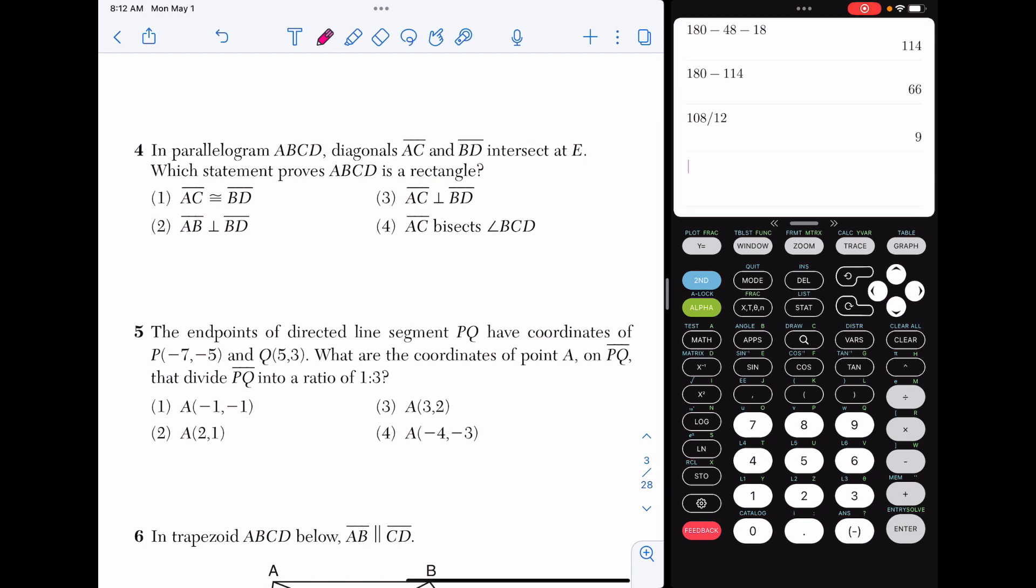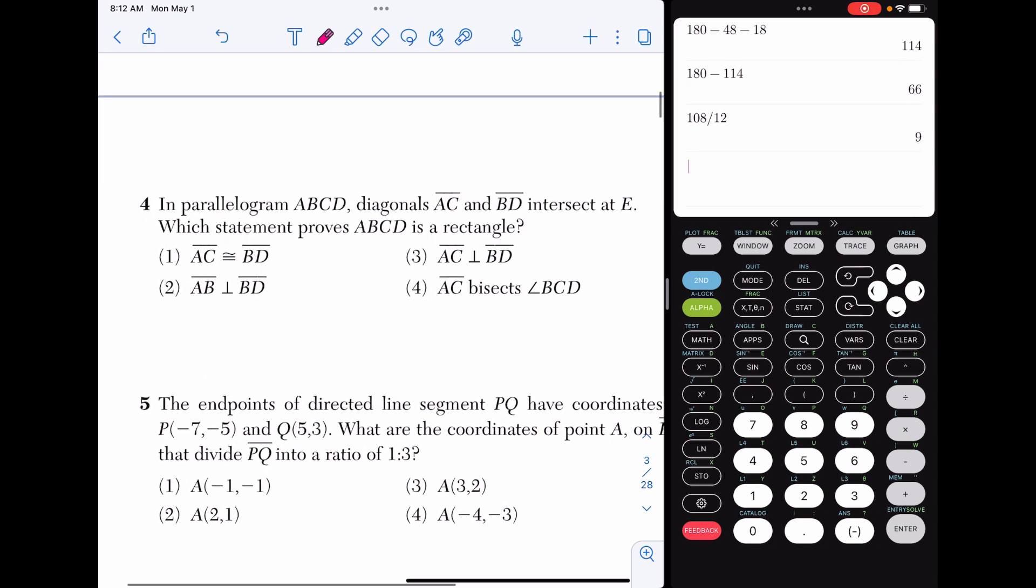Four, in parallelogram ABCD, diagonals AC and BD intersect at E. Which statement proves it's a rectangle? This is, again, they are not giving you a picture. I would 100% go in and do that. So you can draw a parallelogram here. I know we're talking about making it a rectangle, and we'll reference that when we're kind of going through the facts of the answer choices here. So it says we have the two diagonals, AC, BD, and they intersect at E. Which statement proves it's a rectangle?